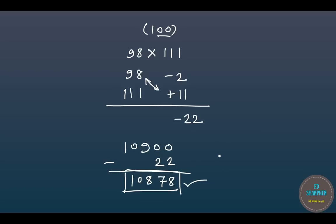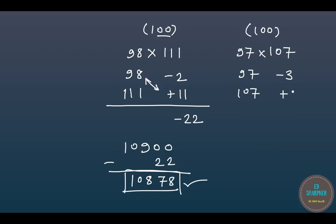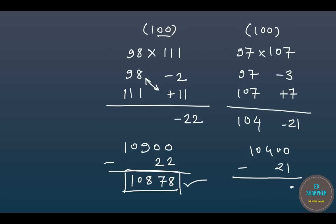Let us do one more quick example — this time I want you to follow along with me. We have 97 with minus 3 and 107 with plus 7. The right-hand side gives minus 21. Combining diagonally gives 104. So we have 10,400 minus 21, which gives 10,379.